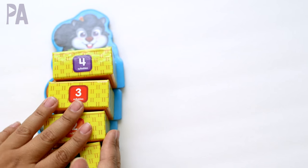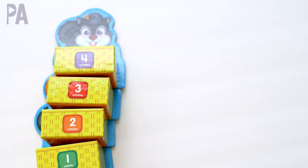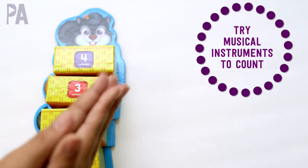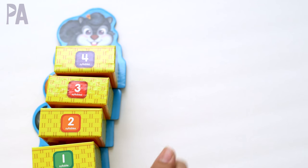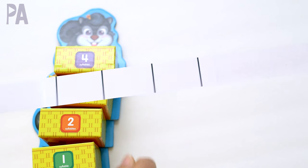Besides clapping, another way you could use is a drum or a musical instrument. And instead of clapping one, two, three, four, you could tap on the drum one, two, three, four, or play on the xylophone one, two, three, four.